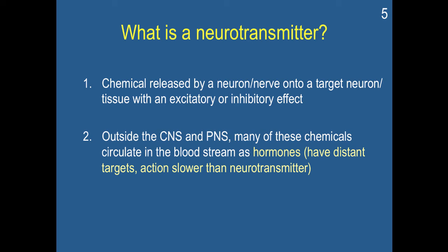This leads us to the question: what is a neurotransmitter — what is this chemical message? A neurotransmitter is a chemical released by a neuron or nerve onto a target neuron or tissue with an excitatory or inhibitory effect. You hear about neurotransmitters all the time in terms of medication, food, different types of behavior, addiction, and everything. Neurotransmitters are the central element of how your body communicates with itself, and this chemical is released from one neuron to be received by another neuron or tissue.